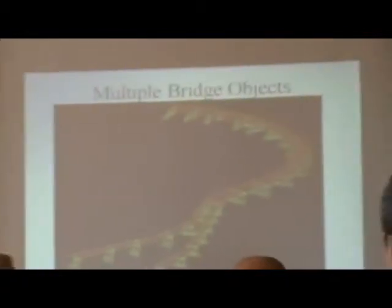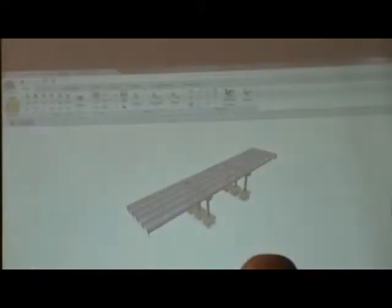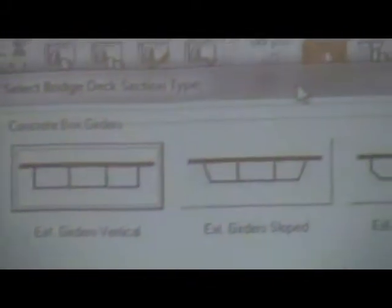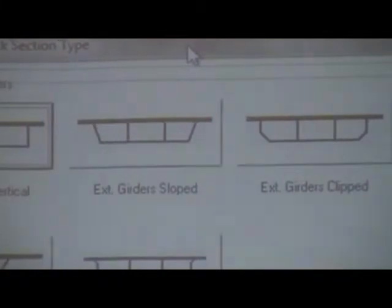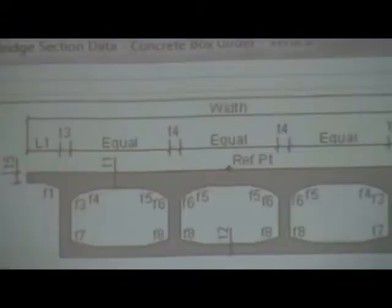You can have all these different kinds of cross sections. And if there's one that's not in there that you'd like to see, you can tell us and we'll put it in for you. They're all parametric — you never have to define any coordinates. It's all based upon how many cells you have, the depth, the dimensions; they're all there.